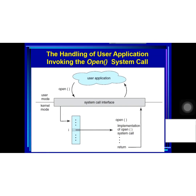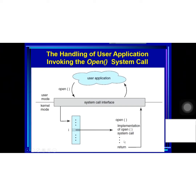The relationship between an API, the system call interface, and the operating system is shown in this figure. When users develop application programs — for example, wanting to open a file — the application calls the system call 'open file' in user mode. The system call interface receives the system call and passes it to the kernel. The kernel receives the system call, the machine mode changes from user mode to kernel mode, and the kernel finds the appropriate part for the open operation. After finishing the open operation, the system returns to user mode from kernel mode and resumes execution of the user's application.